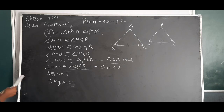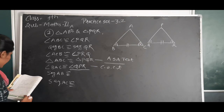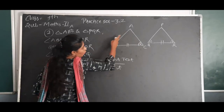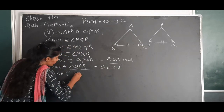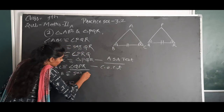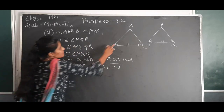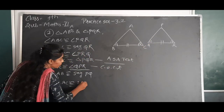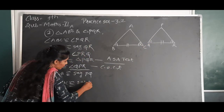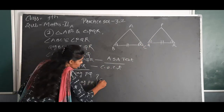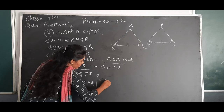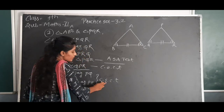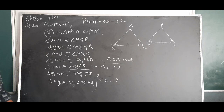Then segment AB is congruent to segment PQ, and segment AC is congruent to segment PR, by corresponding sides of congruent triangles (CSCT).